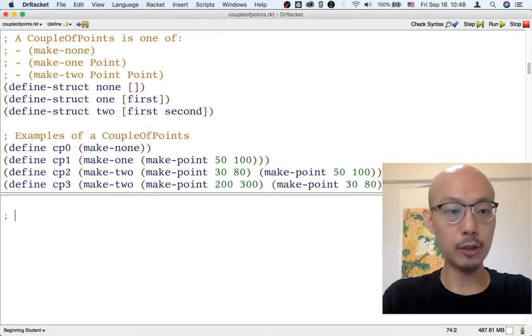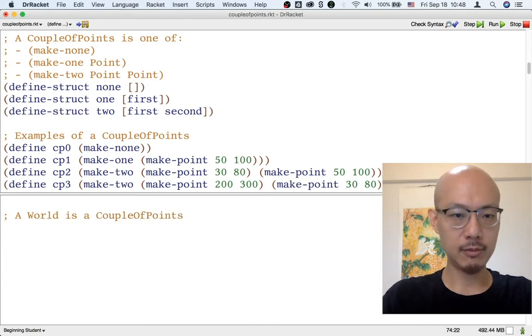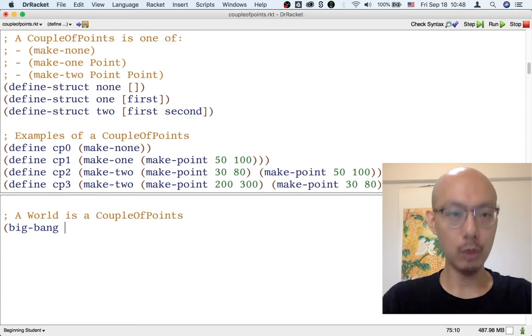We're going to use for a world a couple of points. So to make a Big Bang, we have to give an initial world, which is an initial couple of points. We could use cp3, which is a data example that we made earlier.